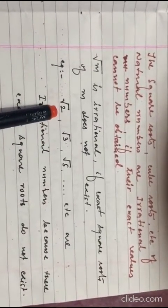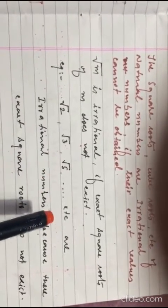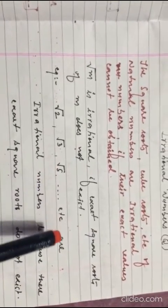It means the value of root 2 is like 1.4414, etc. Similarly, for root 3, 1.732 like this. Root 5, 2.236 like that.